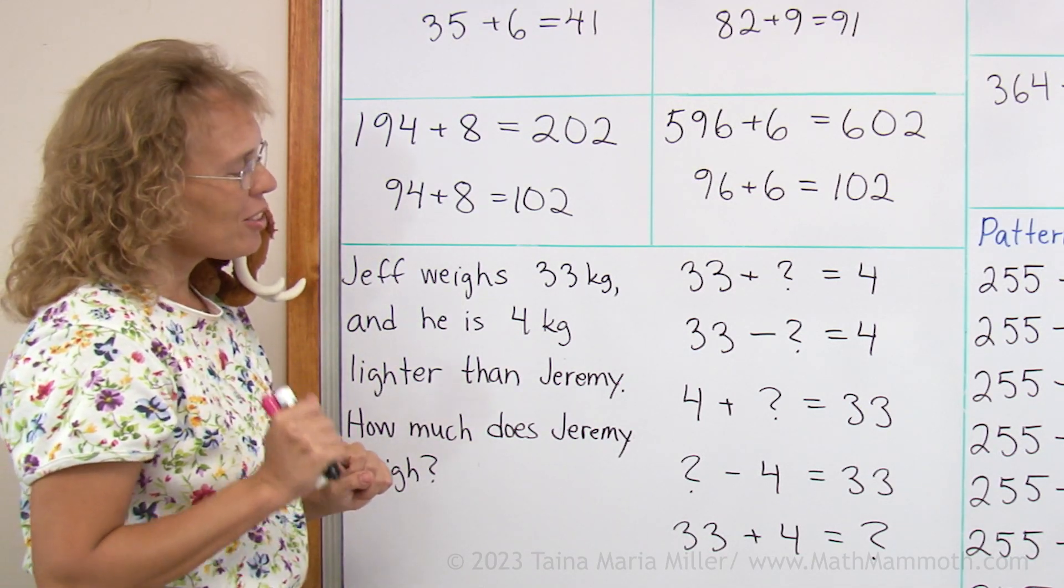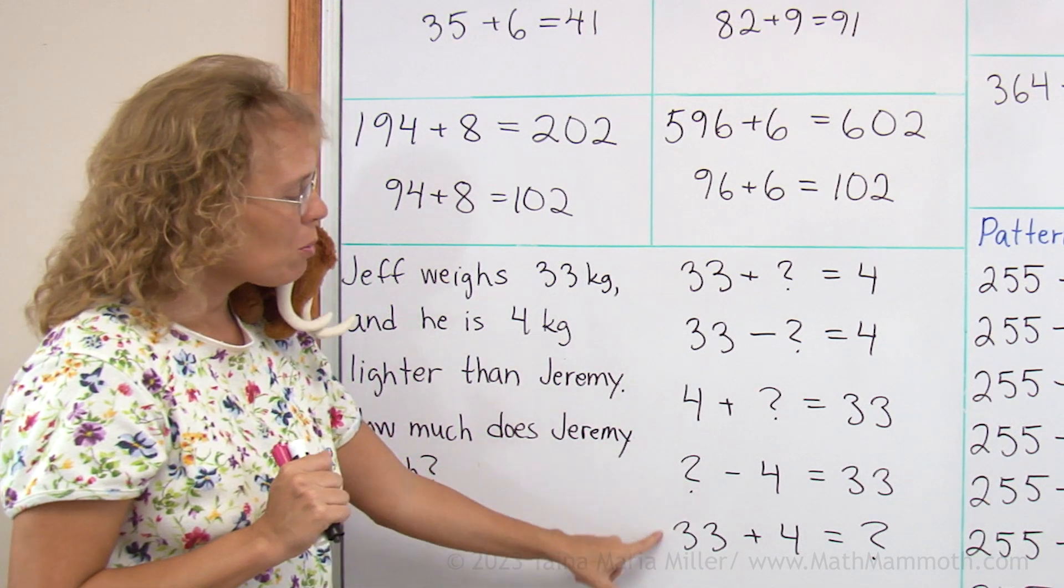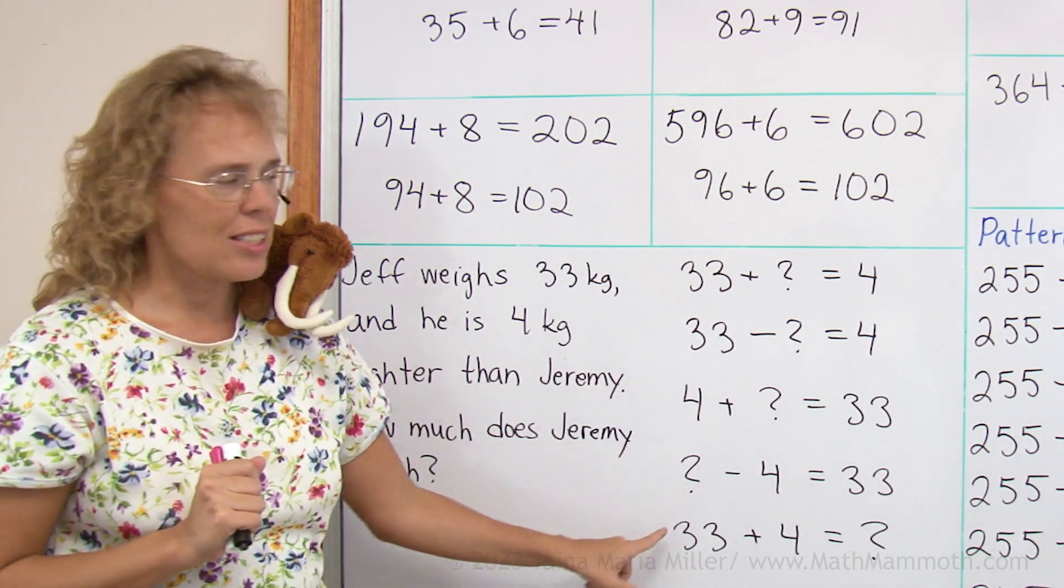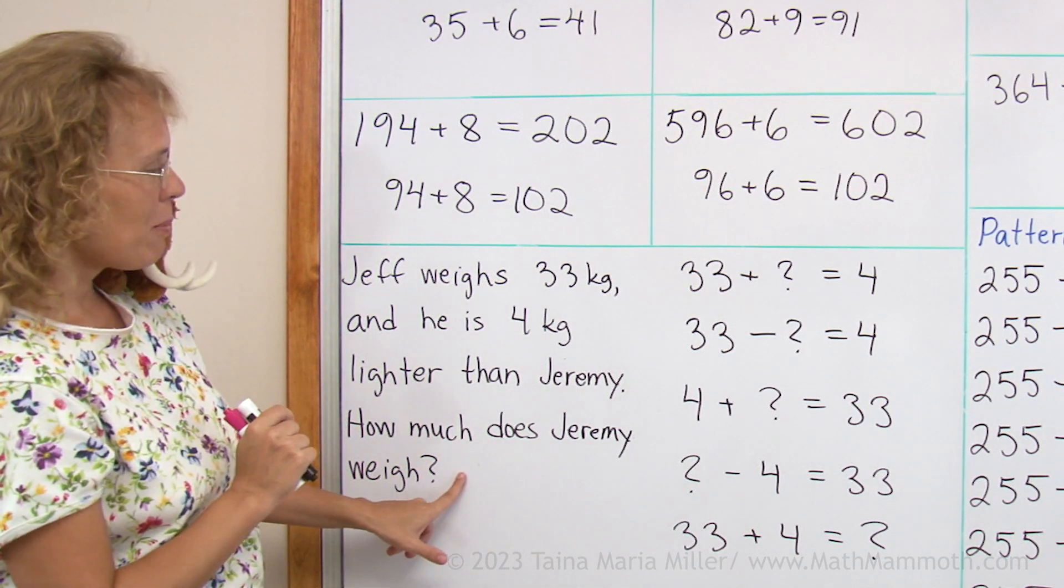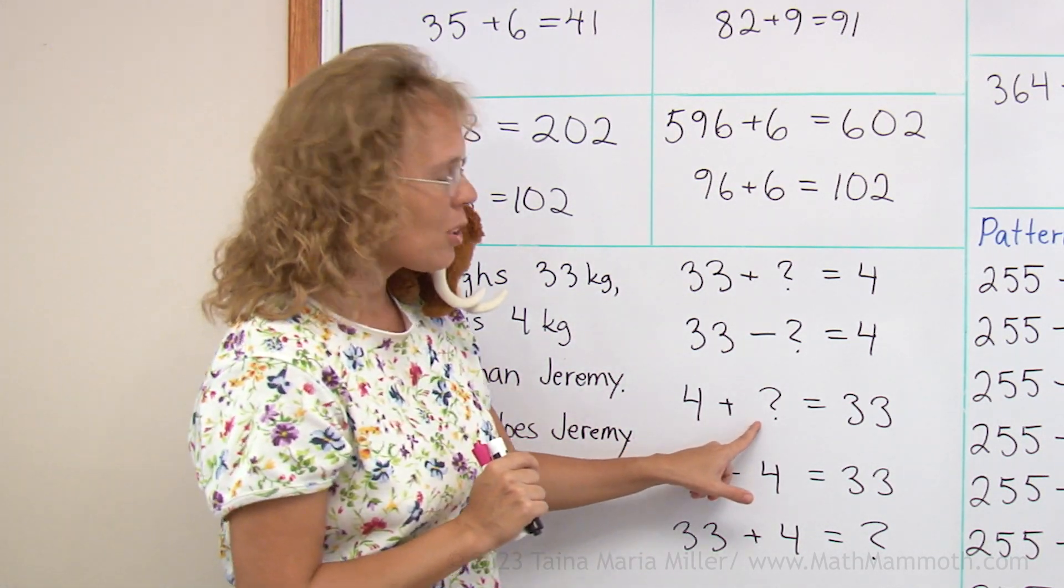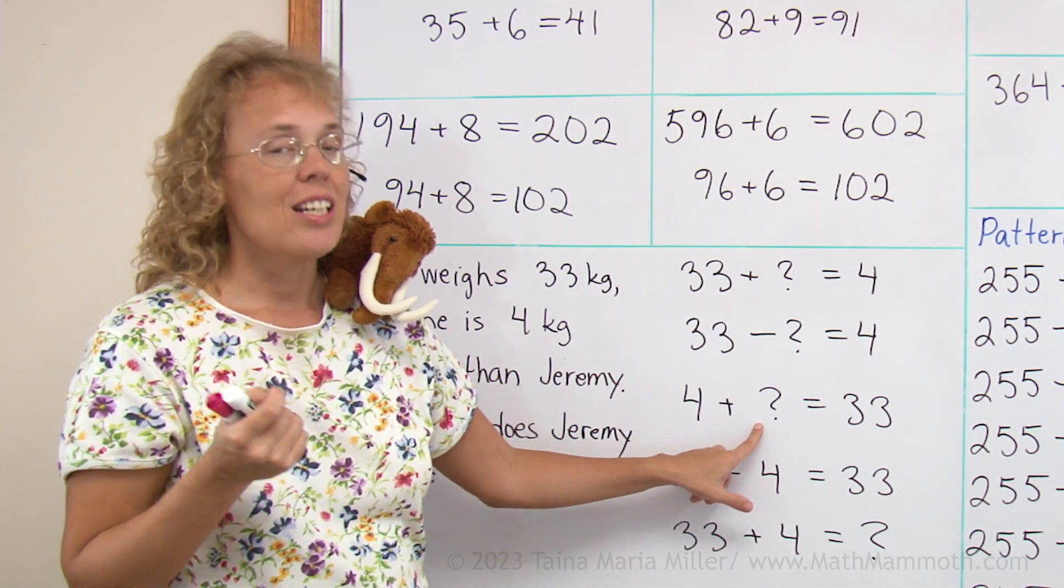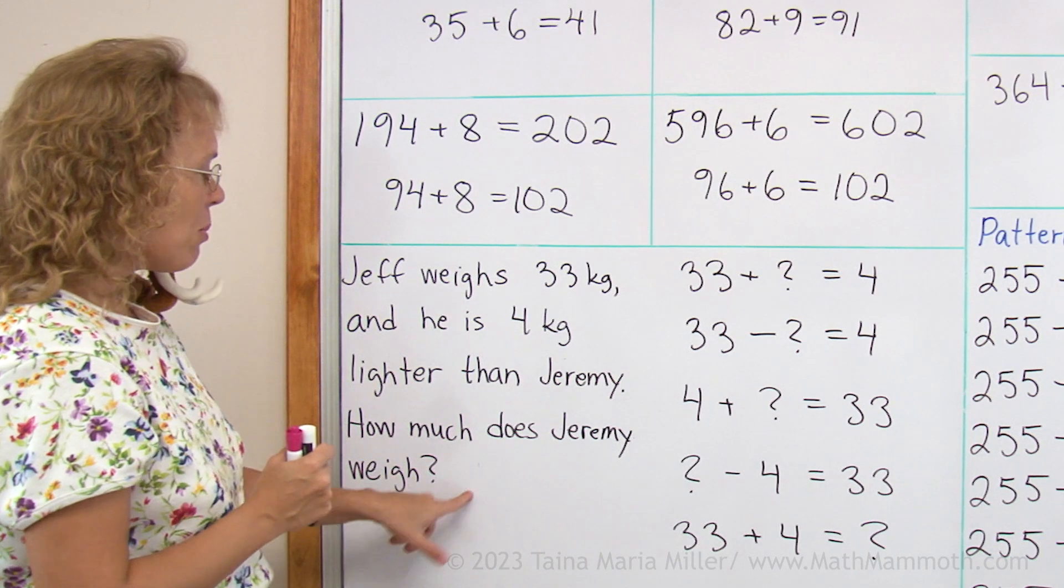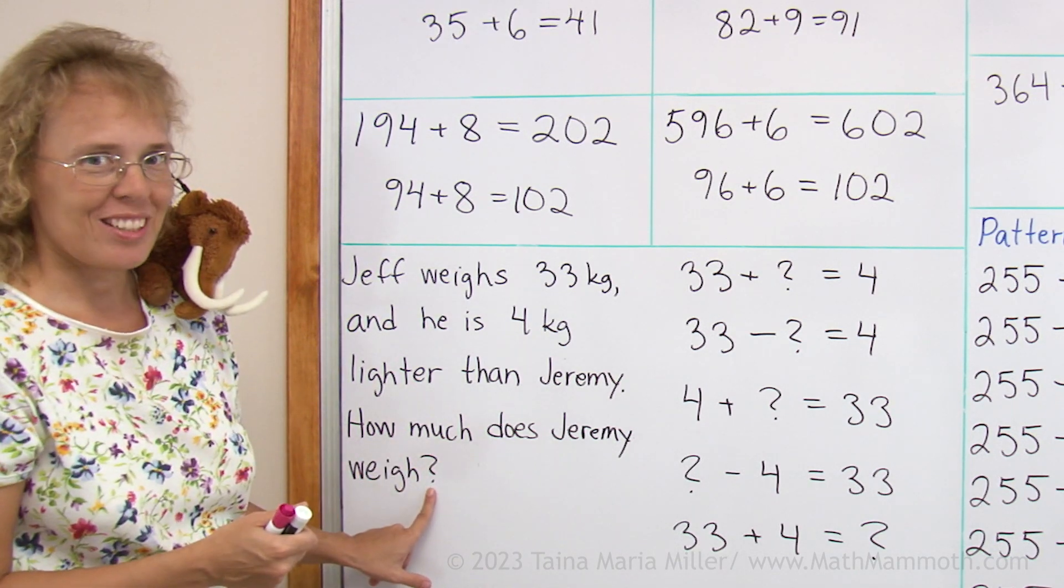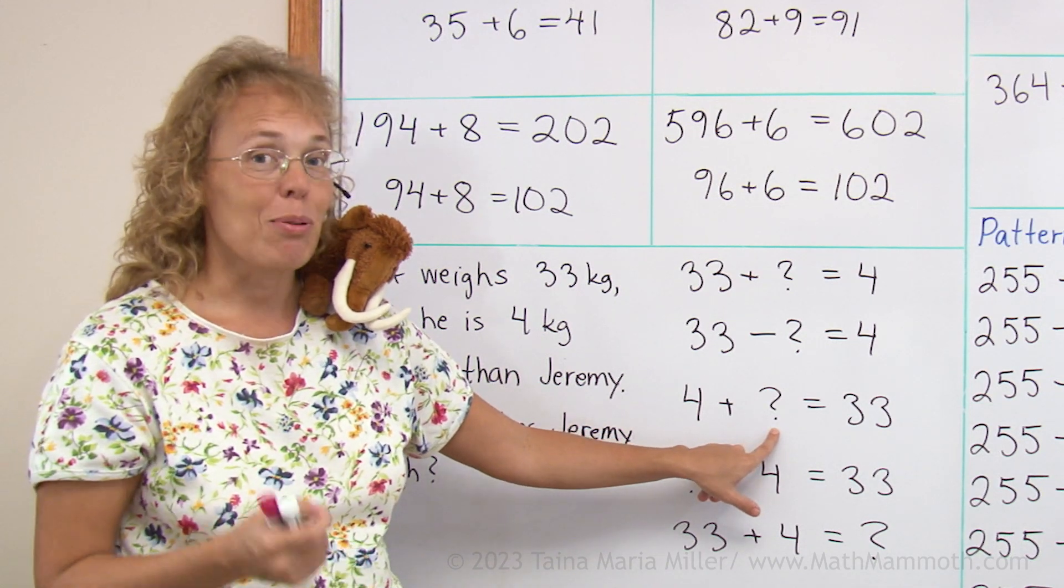And our task here is to choose which one of these number sentences, these additions and subtractions, would match this problem. Notice there's these question marks, and that's my unknown, that's what I don't know, that's what the problem is asking. The problem asks, how much does Jeremy weigh? So Jeremy's weight is the number that would go here in place of the question mark.